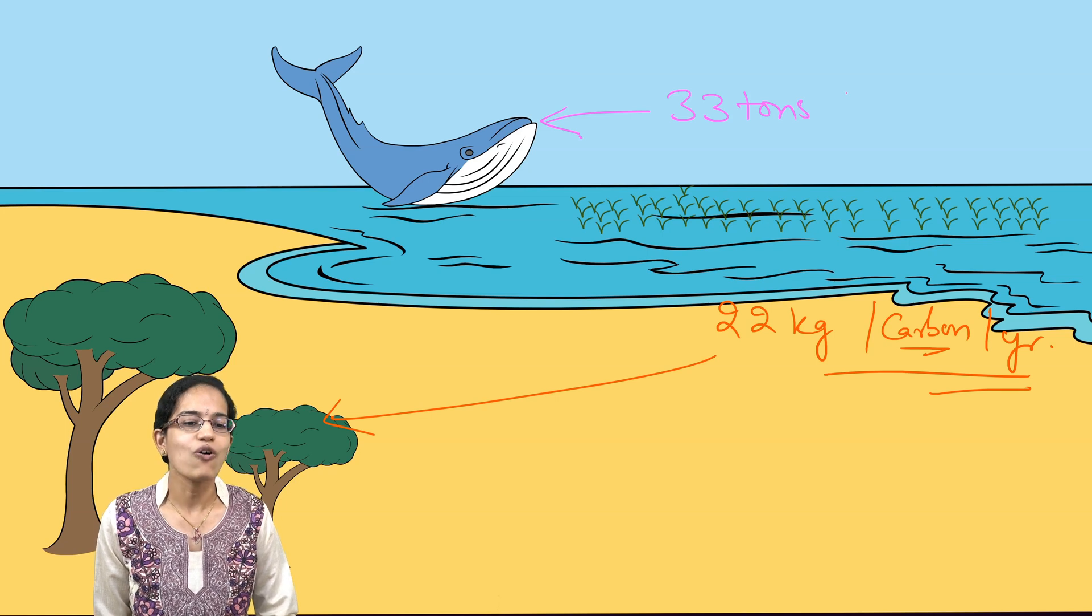A mature tree, one big tree, can absorb nearly 22 kgs of carbon per year. However, whales have an interesting value here, and this is 33 tons of carbon dioxide per year. Can you assume the quantity of work done by a single whale in contrast to the number of trees? One whale is equivalent to nearly 1500 trees. It's equivalent that you rather plant 1500 trees or enrich the ocean by one whale.